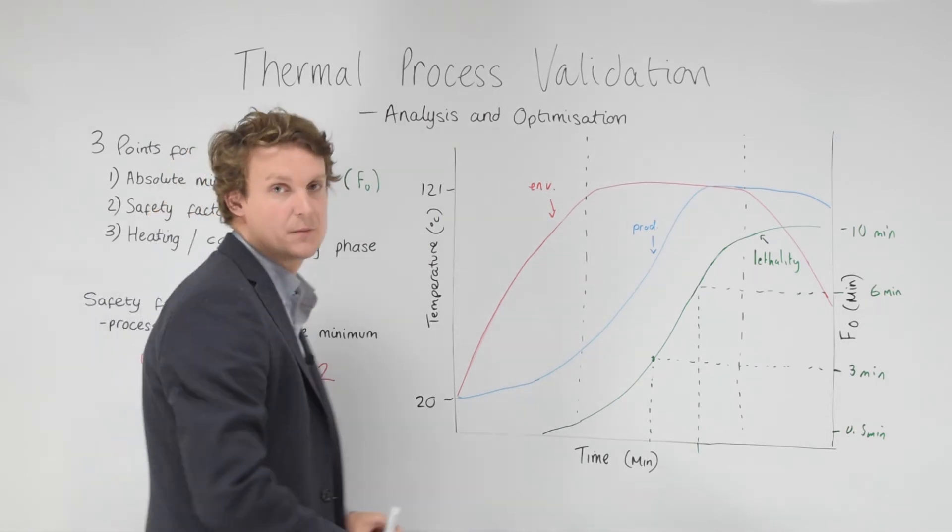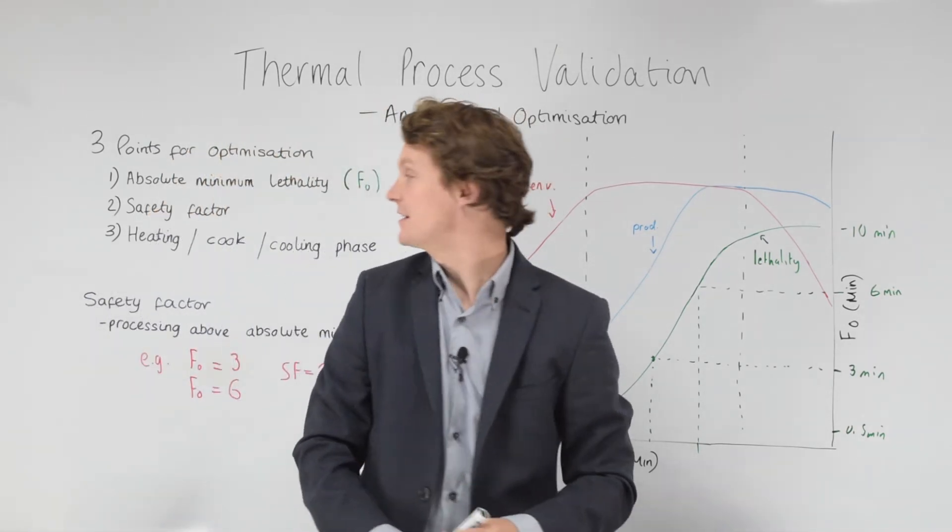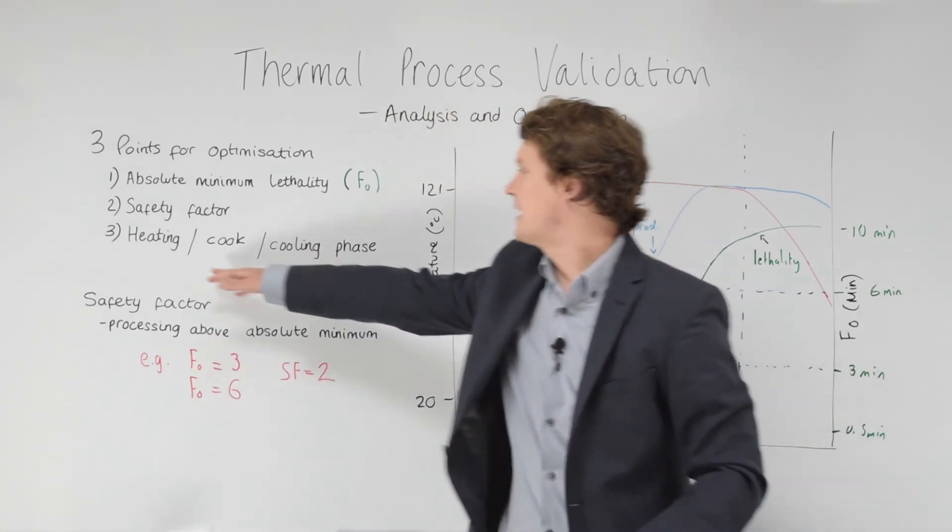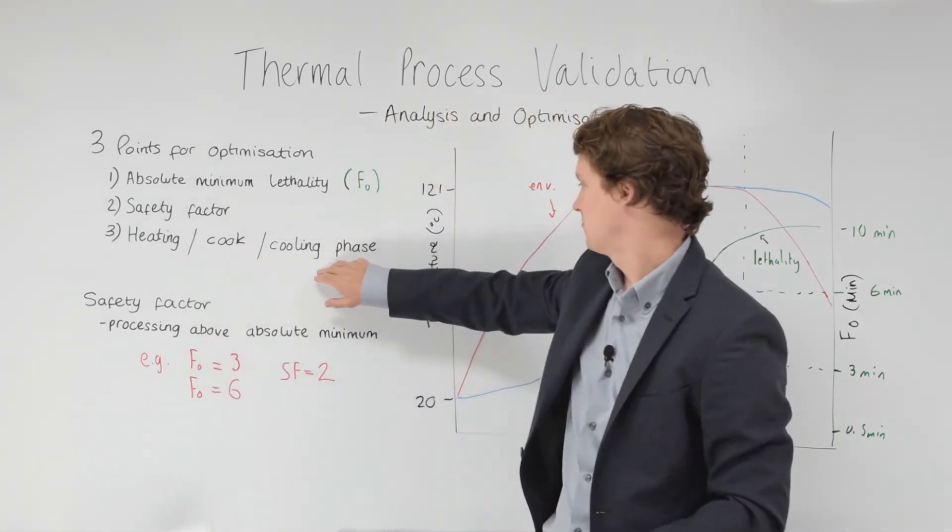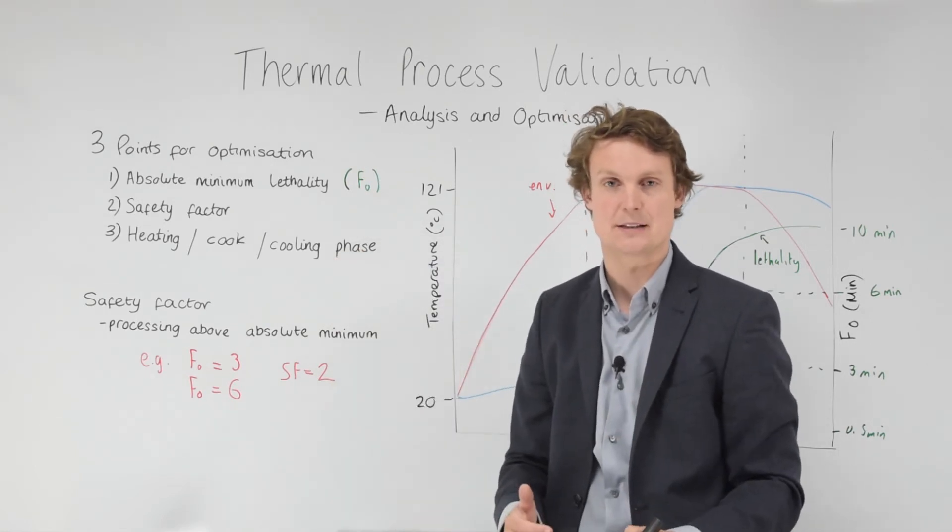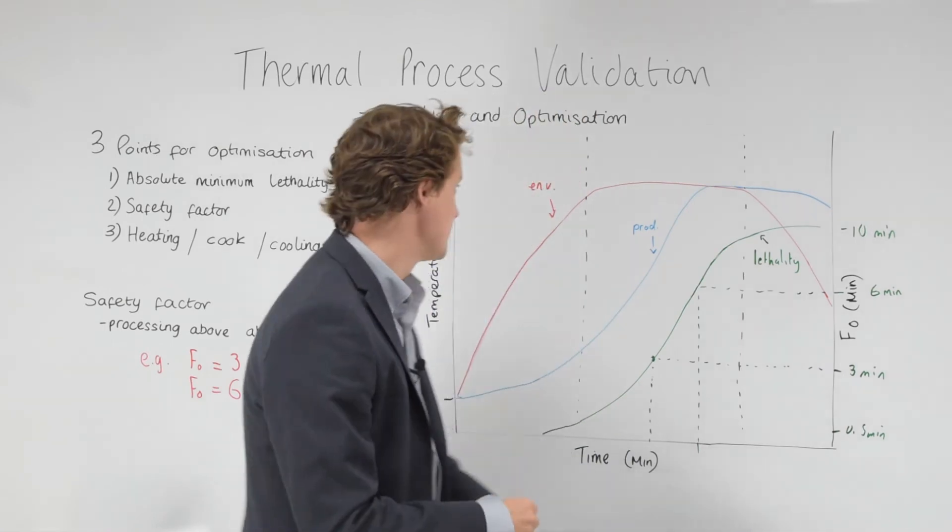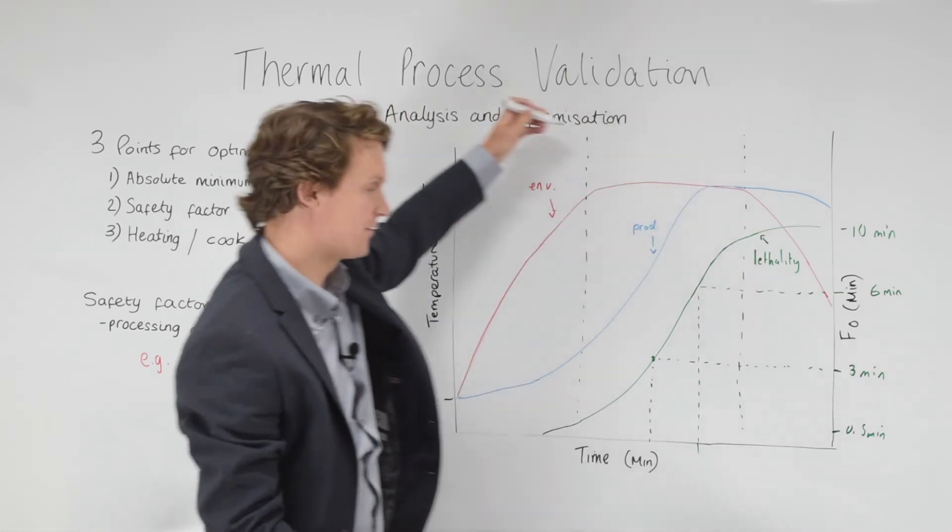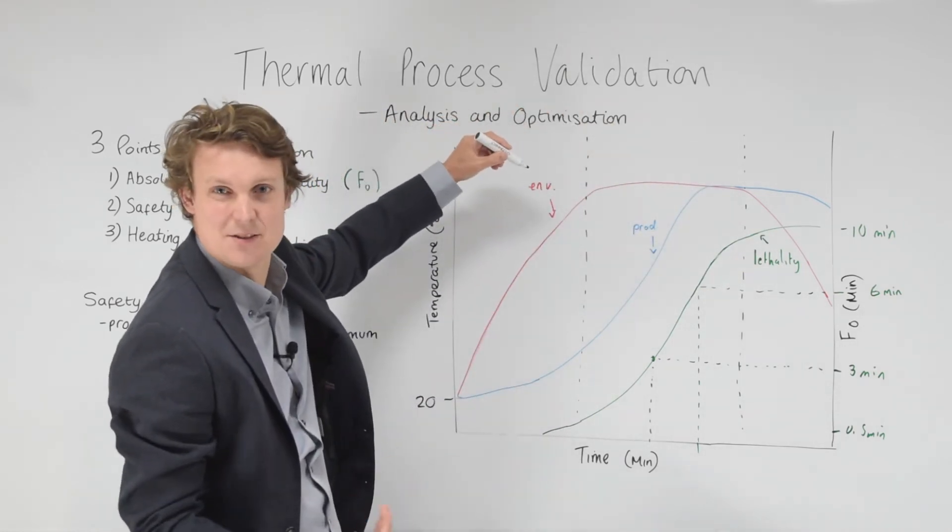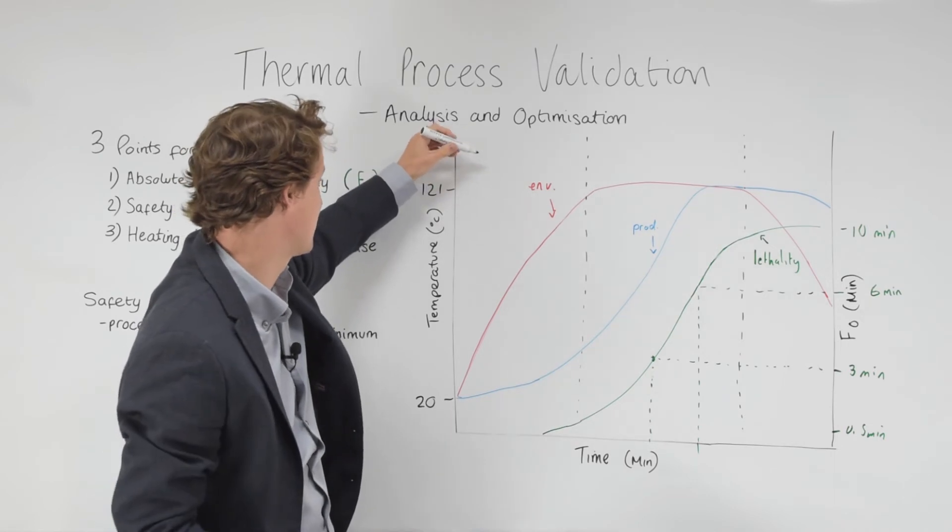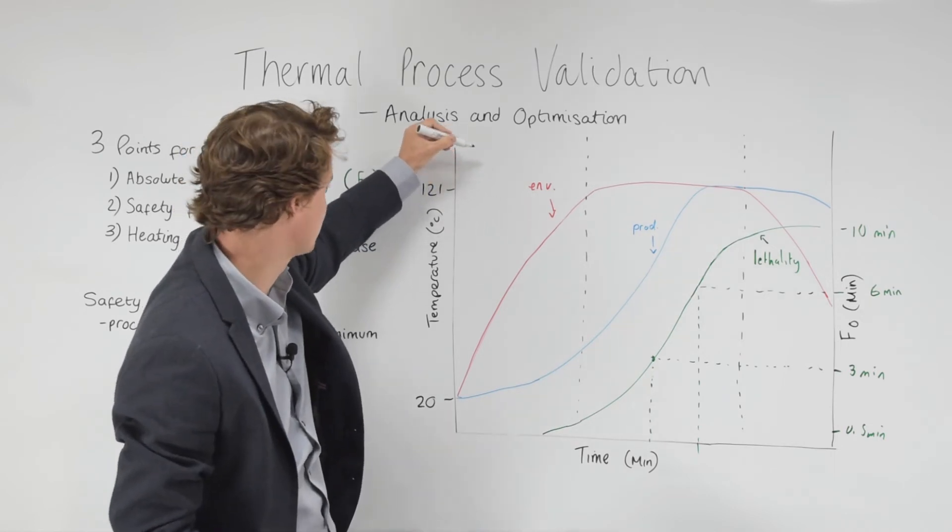The other key point when considering optimization is whether to use the heating, the cook, and or the cooling phase as part of the lethality accumulated. Let me show you what I mean. In this example, the environment temperature dictates three different phases or three different set points even in the actual program or the cycle of the cook.